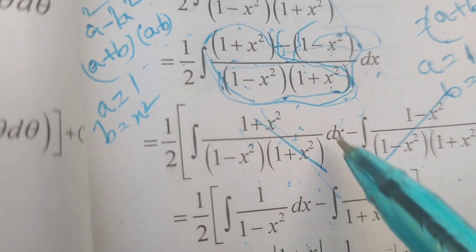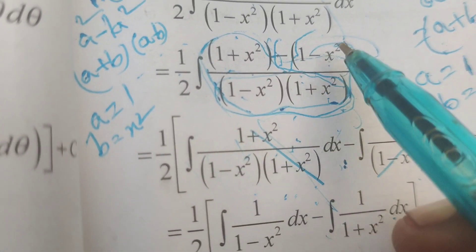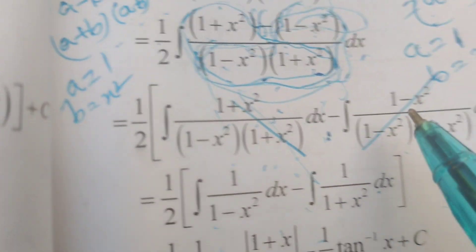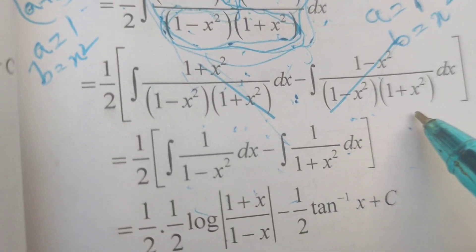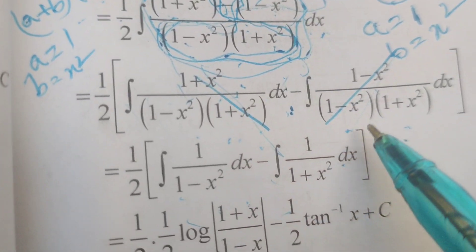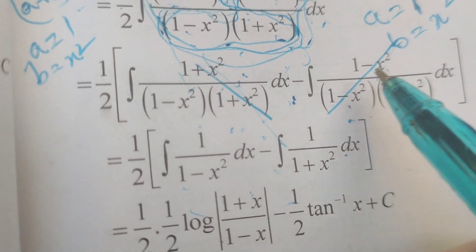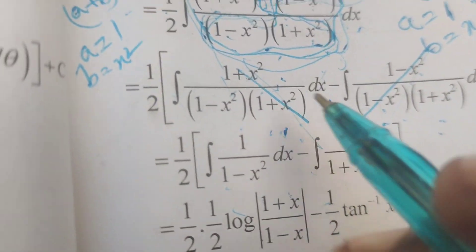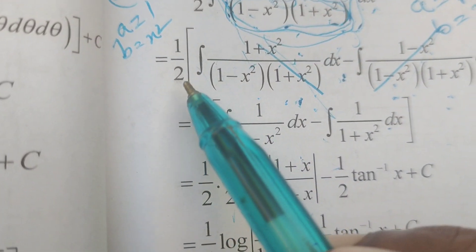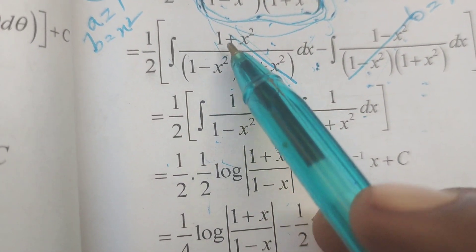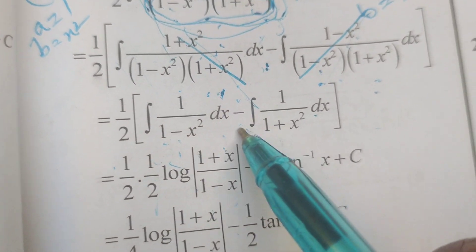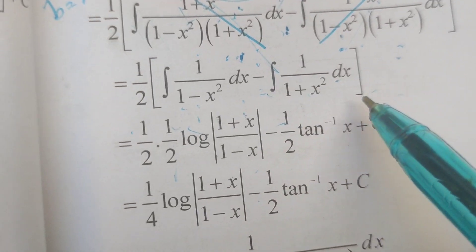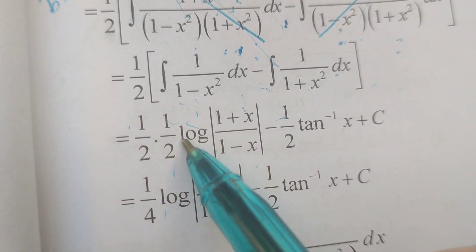Splitting the numerator and denominator: 1 plus x squared by 1 minus x squared into 1 plus x squared dx, minus the integral of 1 minus x squared by 1 minus x squared into 1 plus x squared. Here 1 minus x squared and 1 plus x squared get cancelled respectively, giving 1 by 2 times integral of 1 by 1 minus x squared dx minus integral of 1 by 1 plus x squared dx.